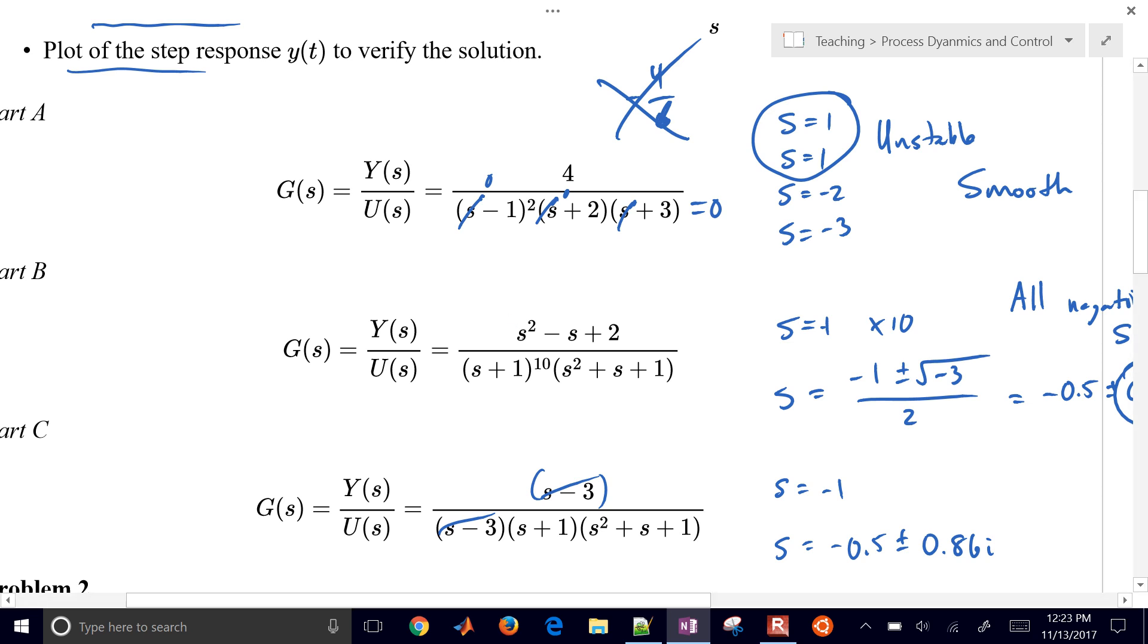But this one is stable. These are going to be 0, and we're going to be left with y infinity equals 2, and that, in this case, is also equal to our gain.